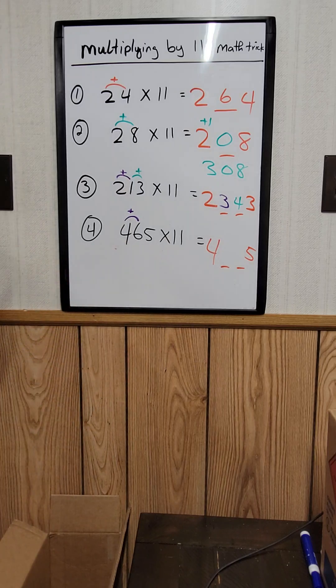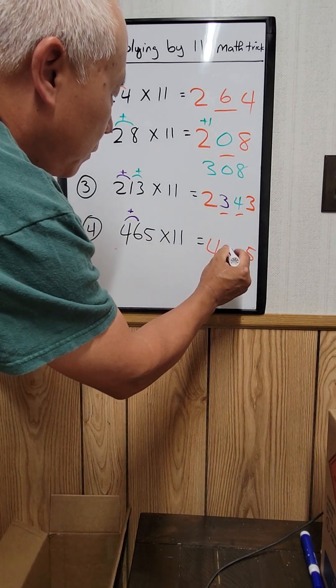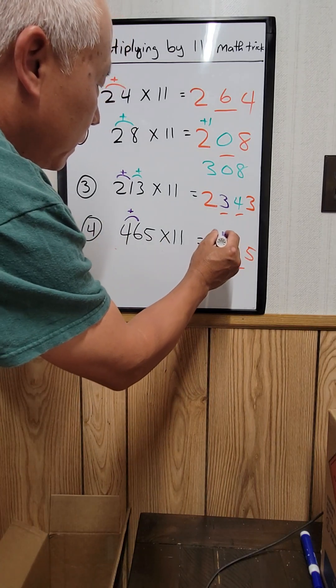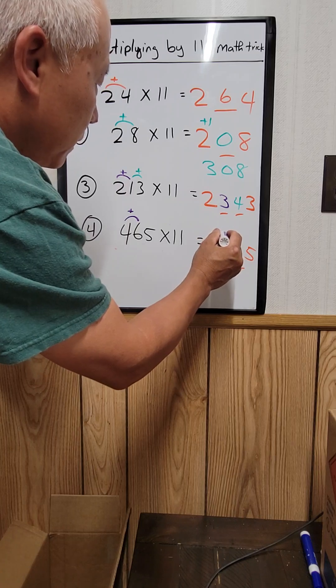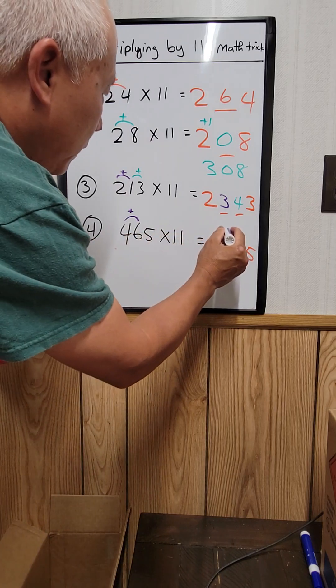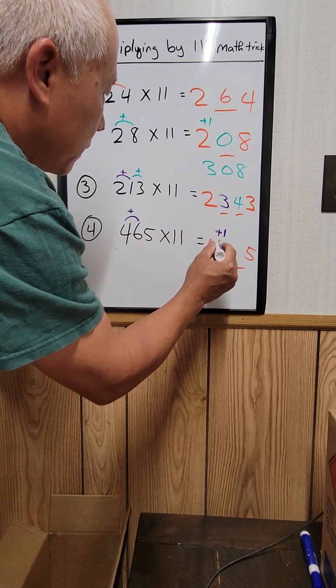Okay, so 4 plus 6 is 10. But remember, you're going to have one digit. So you write a 0 right here. And then you put a 1 up here. So 10, you put a 1 up here. And then that 1 has to be plus with the 4. Okay.